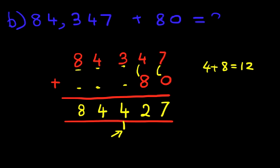And we have our answer. It is 84,427. That is correct. So that is how we do addition of five-digit numbers and tens using the vertical format.